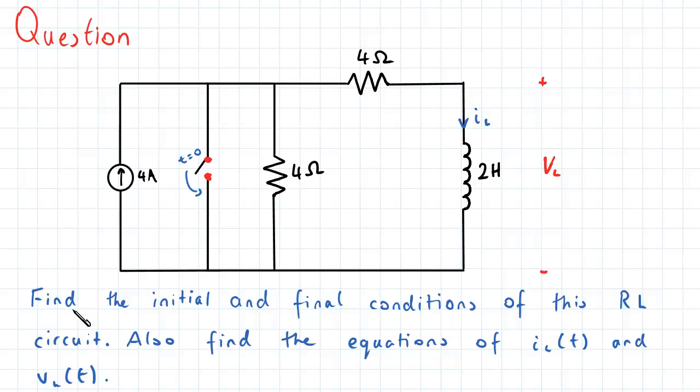And so the question is asking us to find the initial and final conditions of this RL circuit, and so therefore find the VL, the voltage drop across the inductor at zero and at time equal to infinity, and also to find the current flowing through the inductor at time equal to zero and time equal to infinity.